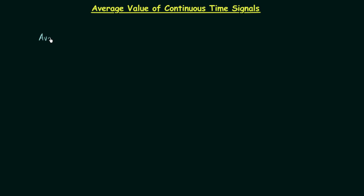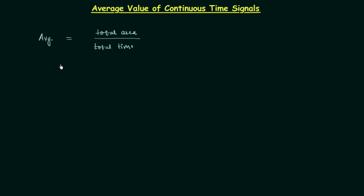The average value of continuous time signals is given as total area over the total time. This is the formula for the calculation of average of a continuous time signal, but we are not very comfortable using this form of the formula. We want to simplify it so that we can use it in examinations without any confusion.